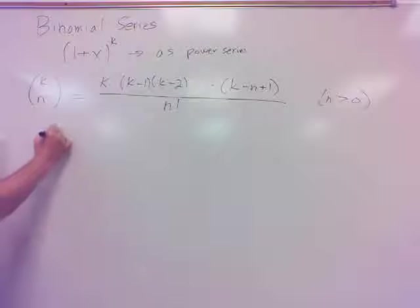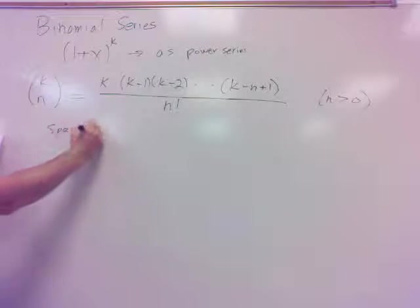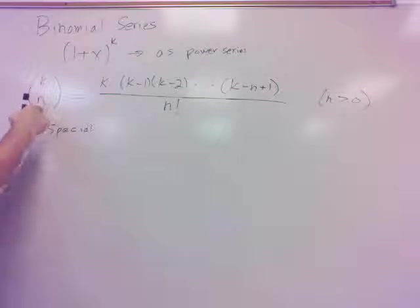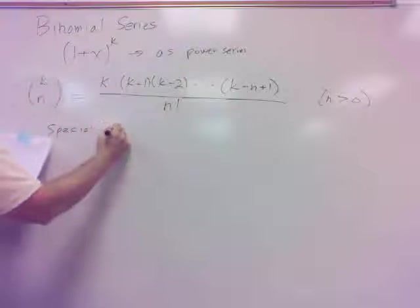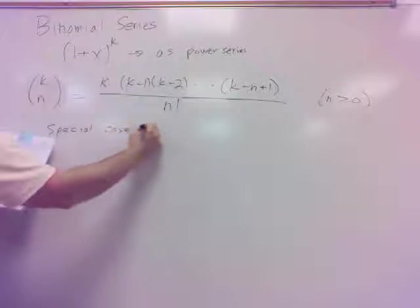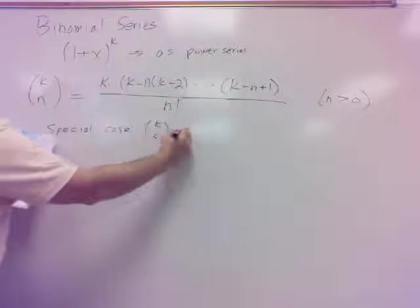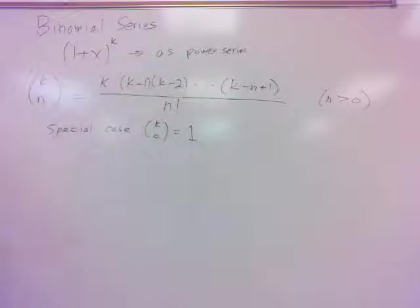One special case, and that is when n equals 0, because that's for n bigger than 0, but the special case is k with n equals 0 is going to be defined to be 1. All right. Let's start easy and work our way up.